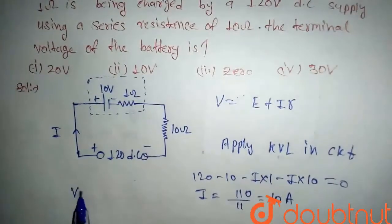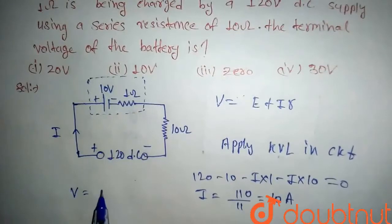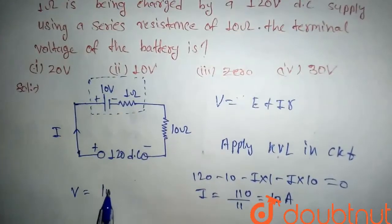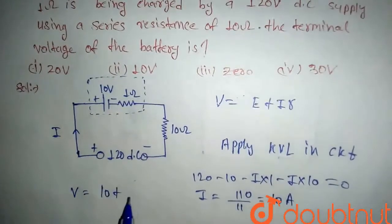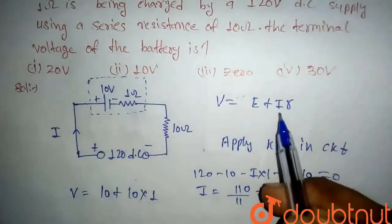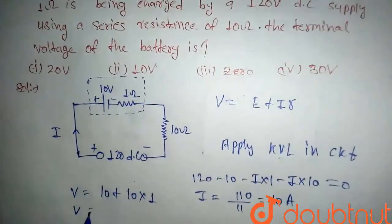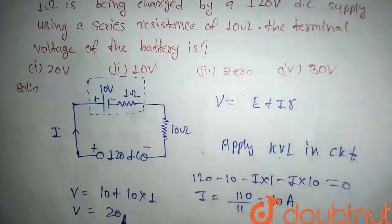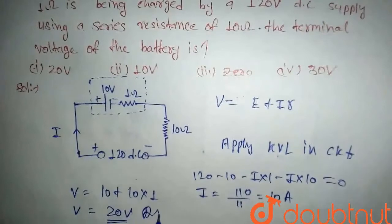So V equals E plus IR. Here our EMF is 10 plus our current is 10 into internal resistance is 1. So here we put the value. After solving it, the terminal voltage comes out to be 20 volt. So this will be our answer.